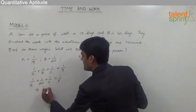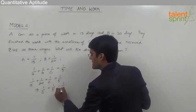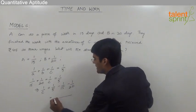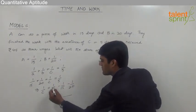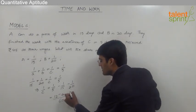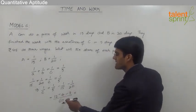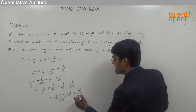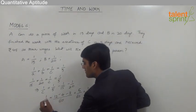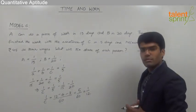The LCM here is 60. So 5 goes 12 times, 15 goes 4 times, and 20 goes 3 times. So 12 - 7 is 5/60, which is nothing but 1/12. So very clearly the work done by C in one day is 1/12.